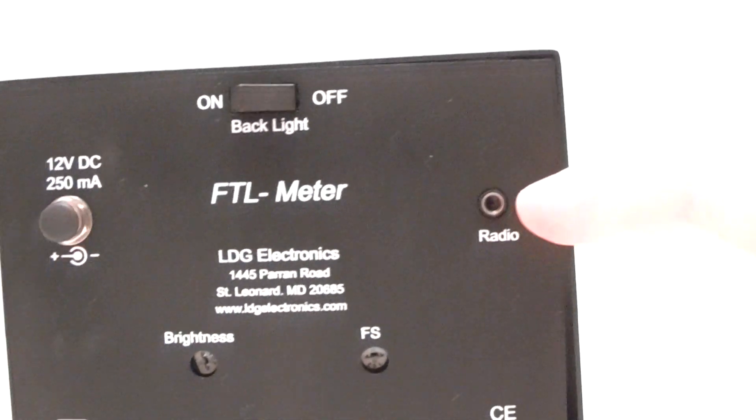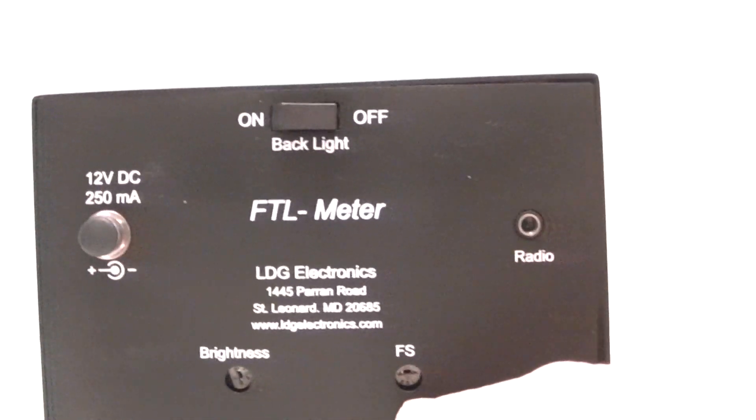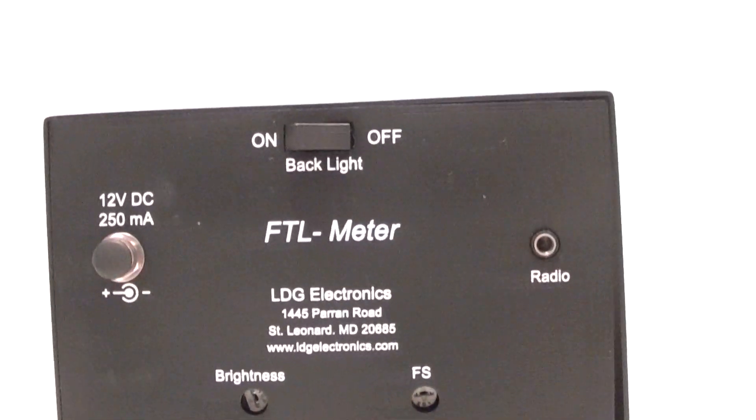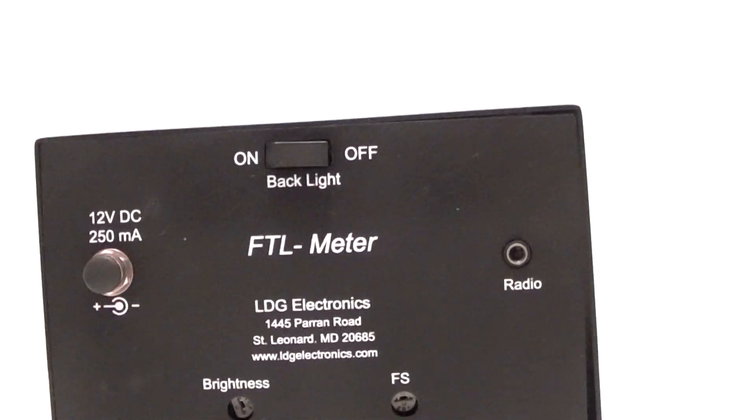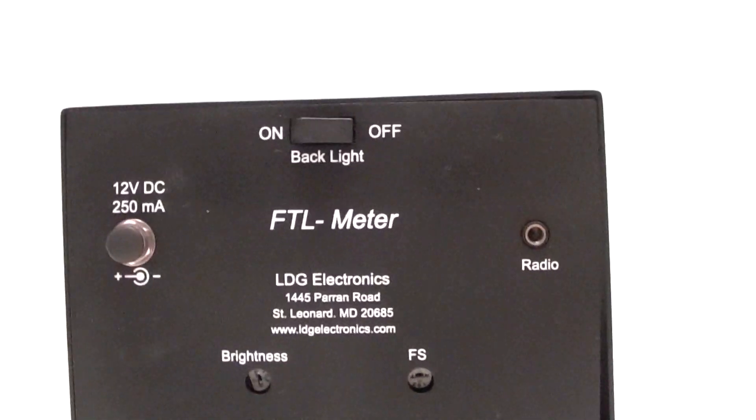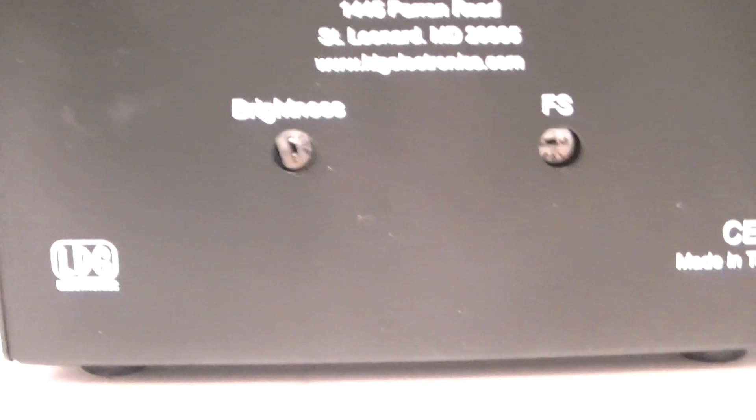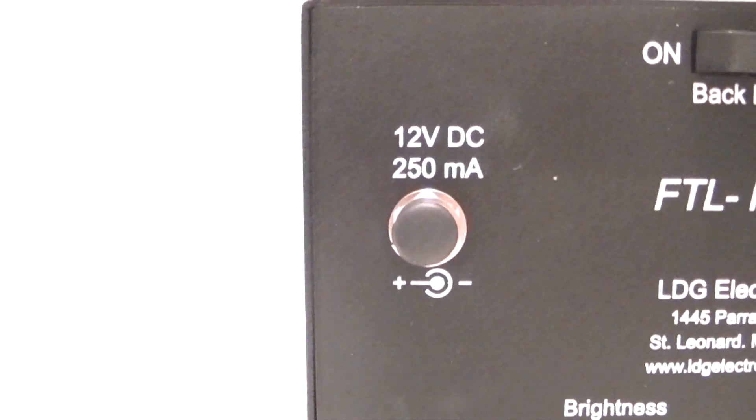On the back you have your connection for your radio. You can adjust your deflection, you want to set that to right past 60 on there. It's a simple adjustment. You have a brightness adjustment and then you also have a power input here which I have a little plug that I made.